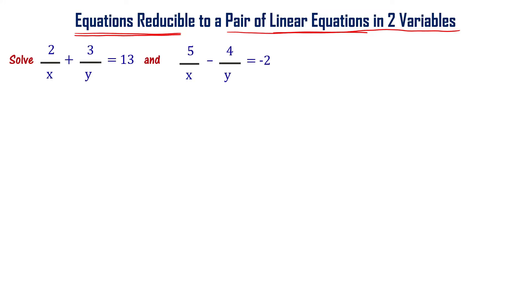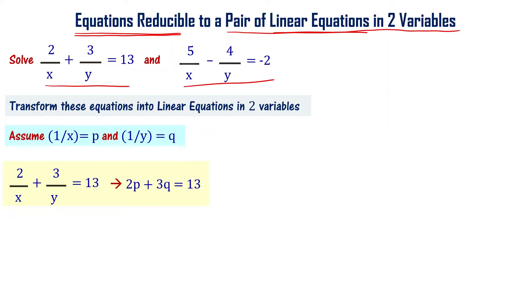Let us solve 2 by x plus 3 by y equal to 13 and 5 by x minus 4 by y equal to minus 2. These equations are not linear equations, but they can be reduced to linear equations. Let's transform these equations into linear equations in two variables. To do that, assume 1 by x equal to p and 1 by y equal to q. So the first equation becomes 2p plus 3q equal to 13. The first equation in pq variables is a linear equation. Second equation: 5p minus 4q equal to minus 2. This is also a linear equation in two variables, p and q. We have a pair of linear equations in two variables, p and q.